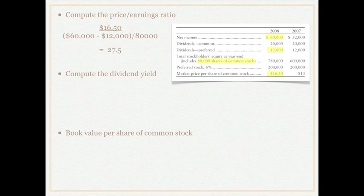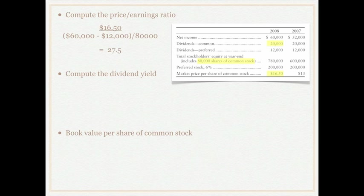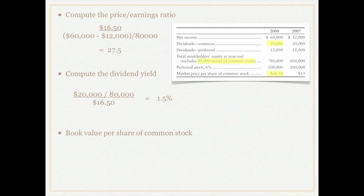For the dividend yield, we take dividends of $20,000 divided by 80,000 shares outstanding to get dividends per share, then divide that by the market price per share of $16.50. This gives us a dividend yield of 1.5%, meaning one and a half percent of the stock's market value is returned as dividends — this is our return for owning the stock.